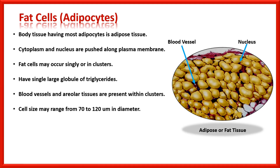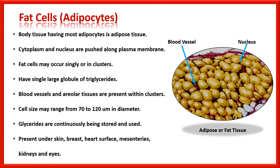Cell size may range from 70 to 120 micrometers in diameter, but in an obese person, that size may increase up to five times. Glycerides are continuously being stored and continuously being used depending upon need and availability. Fat cells are present under the skin, in the breast, on the heart surface, in mesenteries, around the kidneys, and in the eyes.